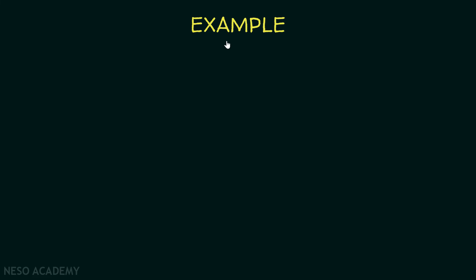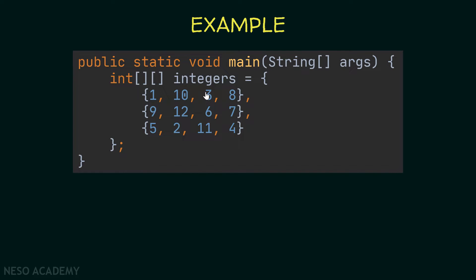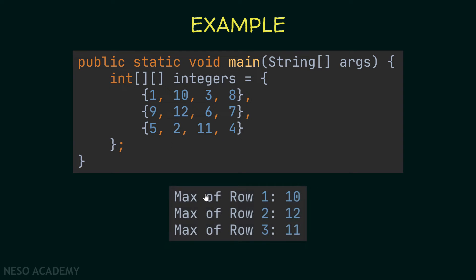For example, if we have this array, then our program should print the following: the maximum of the first row is 10, the second row the maximum is 12, and the third row the maximum is 11. As you can see, the first row's maximum element is 10, the second row's maximum is 12, and the last row's maximum is 11.